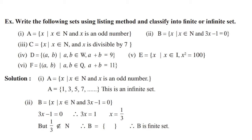For better understanding, let's consider some examples. The first example: A is the set of all x such that x belongs to N (natural numbers) and x is an odd number. We have so many numbers which are odd, like 1, 3, 5, 7, 9, and so on. The numbers are uncountable — we cannot count them. So A is an infinite set.